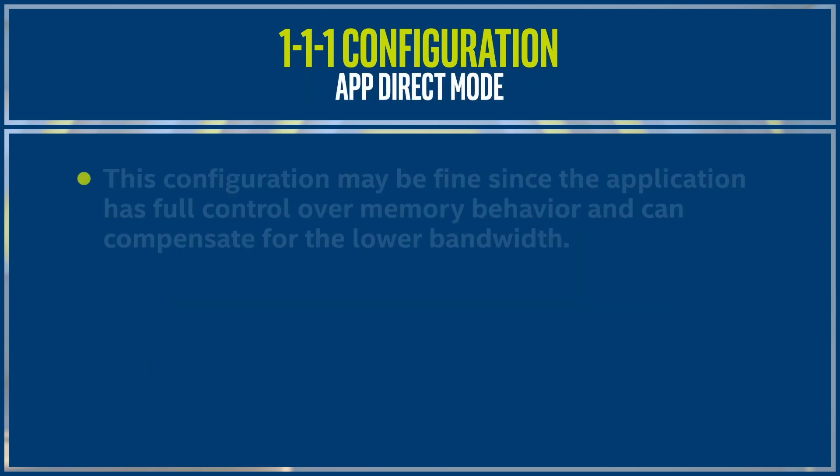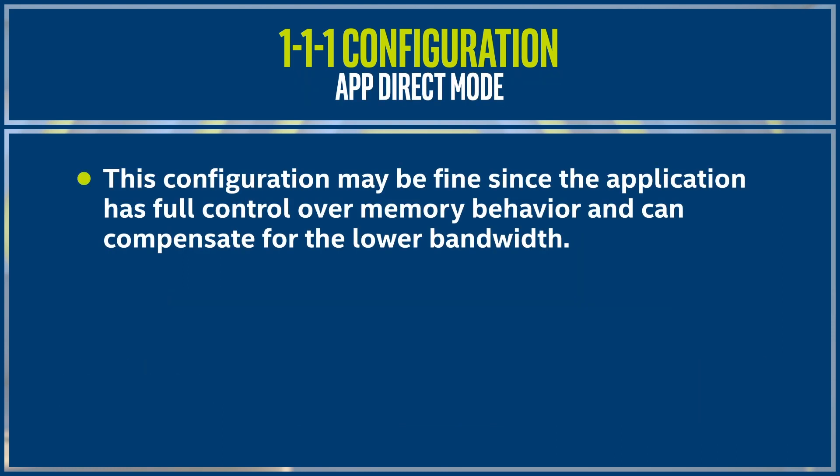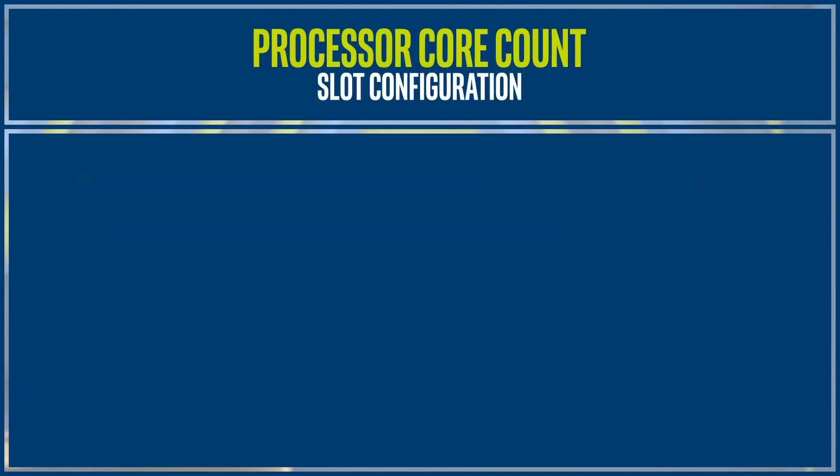In App Direct Mode, this configuration may be fine since the application has full control over memory behavior and can compensate for the lower bandwidth. If the processor has more than 20 cores, use a configuration where you can place a DRAM on every channel.